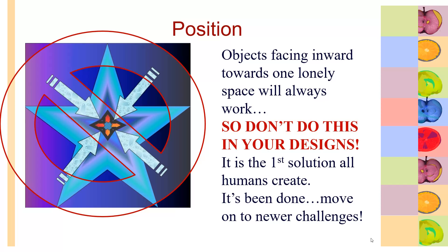Position. We understand that if you put something in the middle of a page and point other objects at it, we will look at that object in the middle of the page. It works. It is the first solution that almost all human beings naturally think of when we think of emphasis. It works, so don't do it again. We get it. Now try some other creative ways to position things so you get our attention without sticking it in the middle and pointing everything at it.